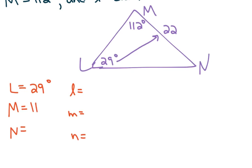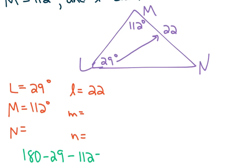The reason I like to fill in the givens is because it helps when trying to find missing sides. The easiest thing to find first is angle N, because the angles inside a triangle always add up to 180. So to find angle N, you do 180 minus 29 minus 112, and you find out it's 39 degrees. Now I've got to find side M or side N — this is how the law of sines works.